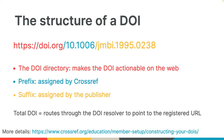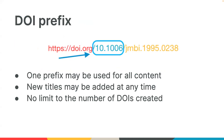The blue part of the DOI is the prefix, and each member is assigned a unique prefix when they join. The yellow is the suffix, and this is the part of the DOI created by the publisher that is unique to each content item. When you join Crossref, you're assigned a unique prefix for your account in the format of 10 followed by five digits. Prefixes originally had four digits, but have been five since 2012.